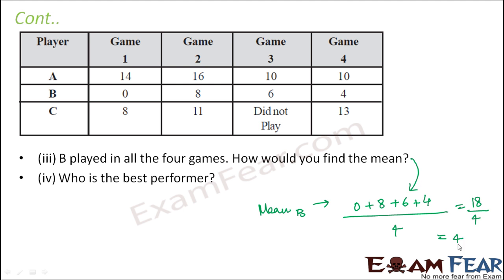Now when you find this sum, it comes out to be 18 divided by 4, which is equal to 4.5. So the average score of B is 4.5. Now the last question is, who is the best performer? When you look at the average score, if you compare, you would see that the average score of A is greater than C, which in turn is greater than B.